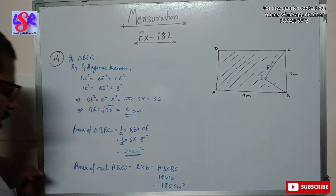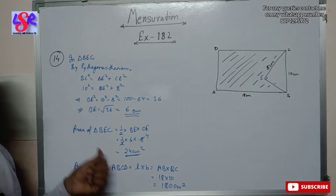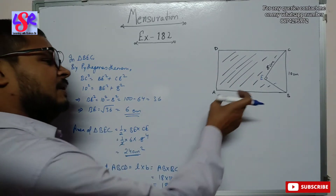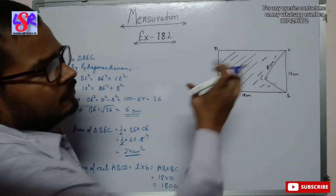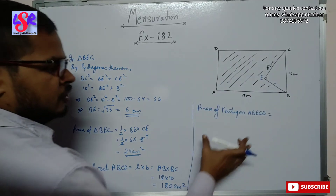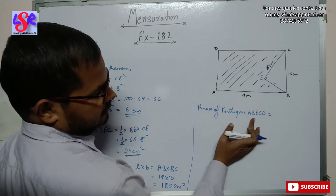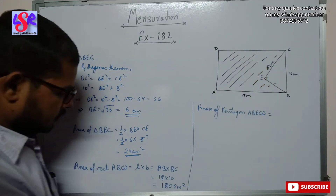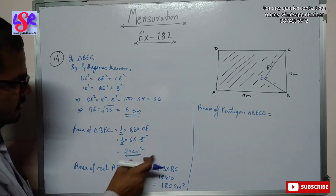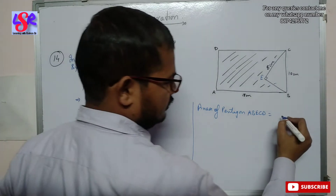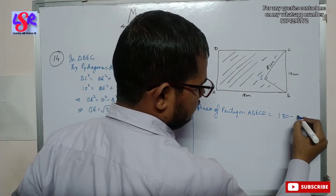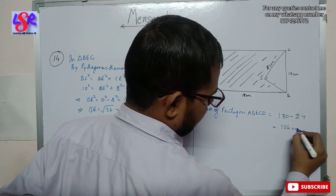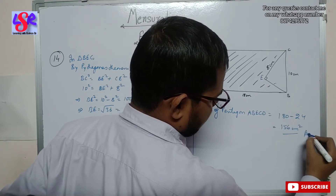After getting the area of the rectangle and area of the triangle, we calculate the area of the shaded region by subtracting the area of the triangle from the area of the rectangle. So the area of pentagon ABECD equals area of rectangle minus area of triangle, which is 180 minus 24 equals 156 square centimeters as the answer.